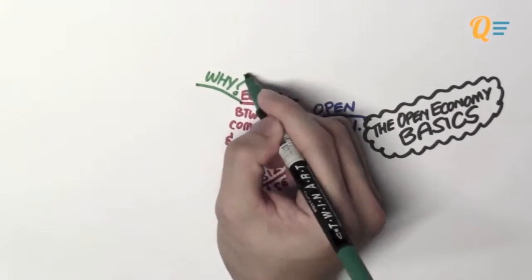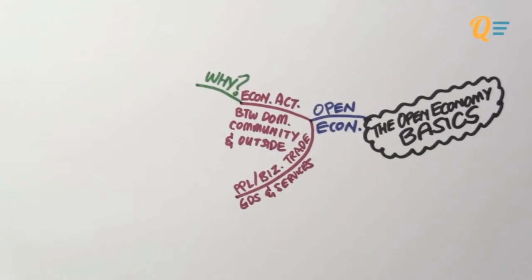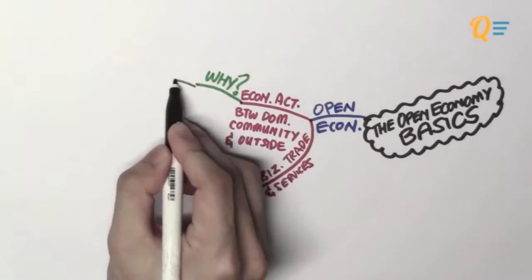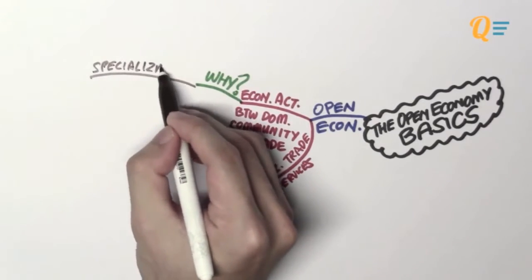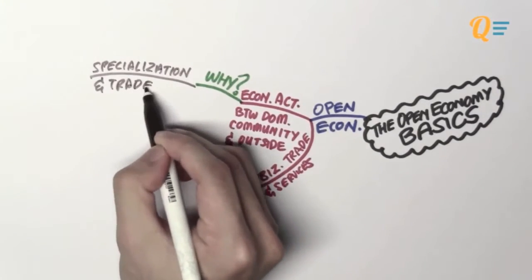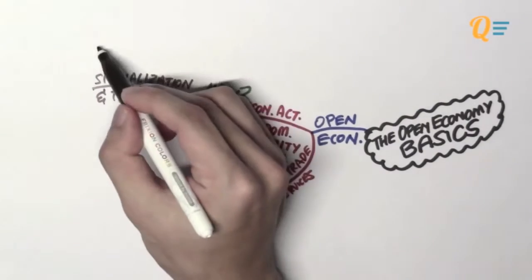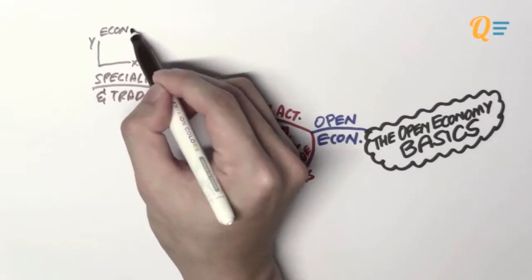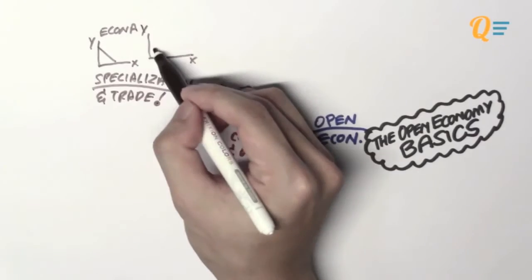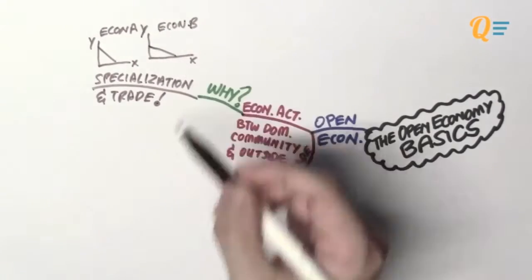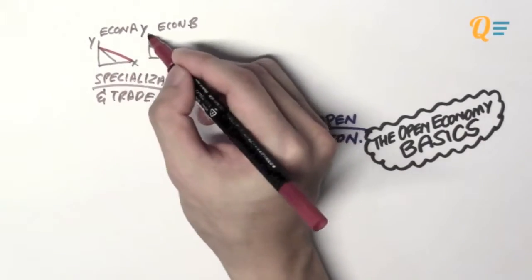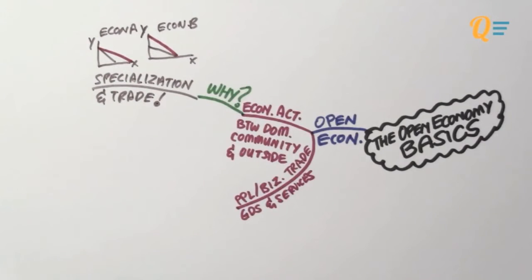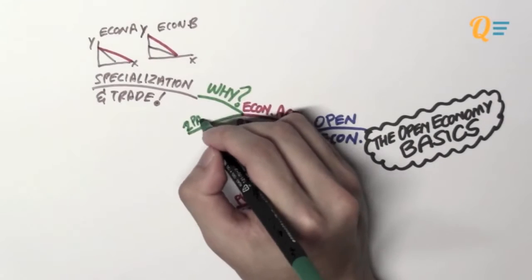So why will there be these kind of economic activities between two countries? Remember chapter one? We were talking about the PPF, but we were also talking about specializing and trading. And one of the reasons why two countries would want to specialize in trade is so that they can help each of them push out the PPF, which is also the consumption possibility frontier. So both economies become better off because they can produce more, hence they can consume more.